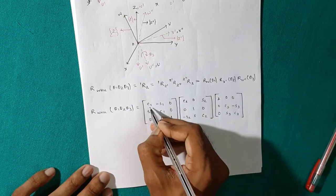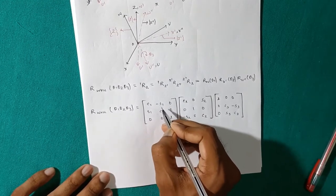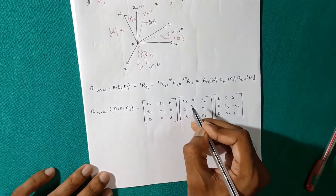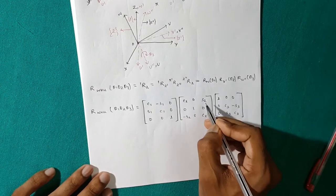Here, C1 means cos theta1, -S1 means -sin theta1, C2 means cos theta2, S2 means sin theta2, and so on.